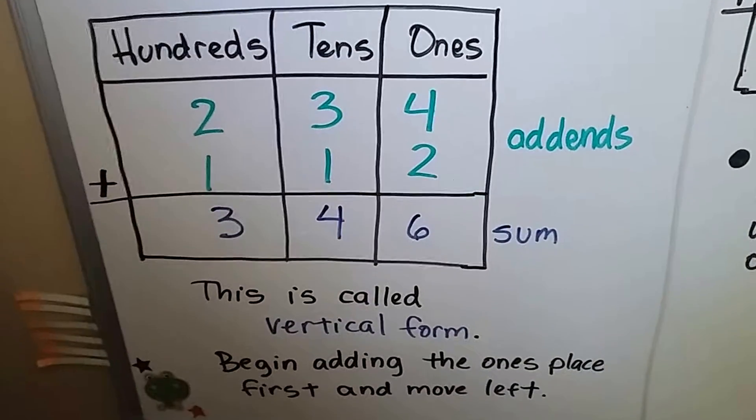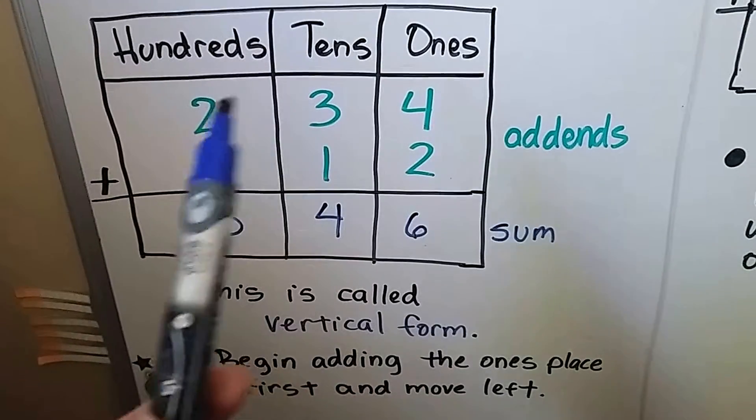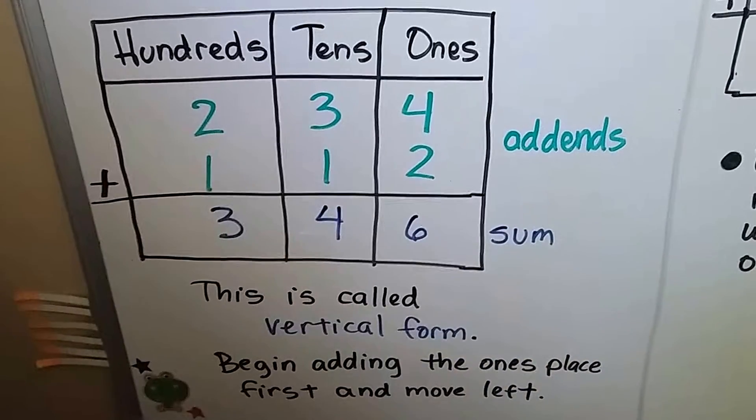So now it's in vertical form. We just begin adding from the ones place and then move to the next place value and the next place value to add.